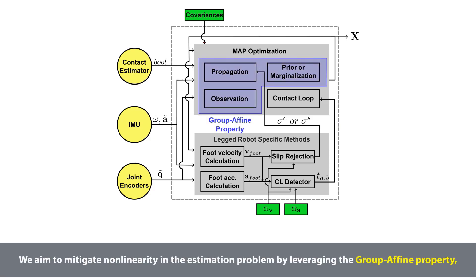This is the overall structure of the proposed estimator framework. We aim to mitigate nonlinearity in the estimation problem by leveraging the group affine property, which brings the state independent Jacobian of the residual function.